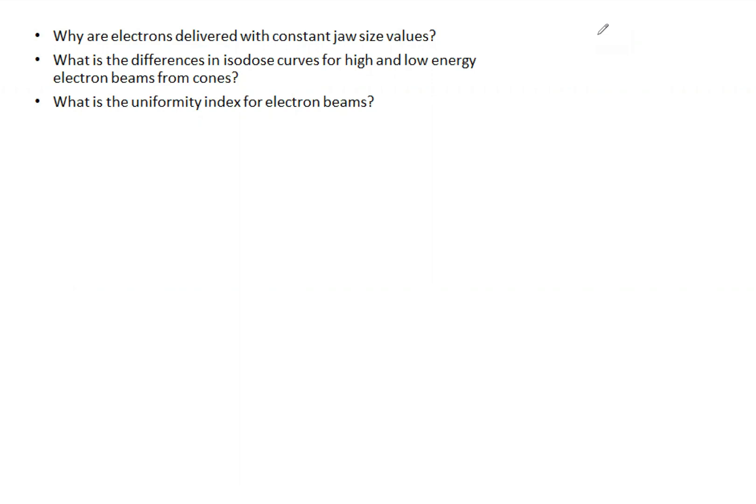So the first is why do we have constant jaw size values when we're treating electrons? That's because there is a huge variation in output with the jaw size, especially in lower energies. Because of this, to really compare, we need constant jaw sizes when treating, when we're doing dosimetry, or when we're doing some of our outputs.